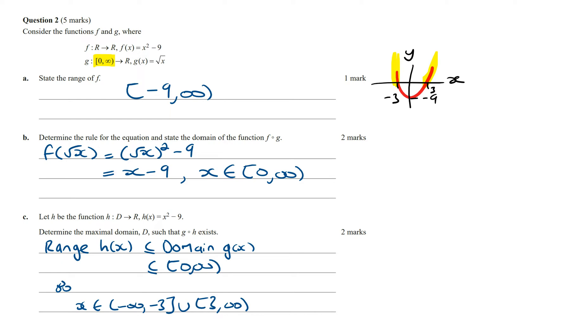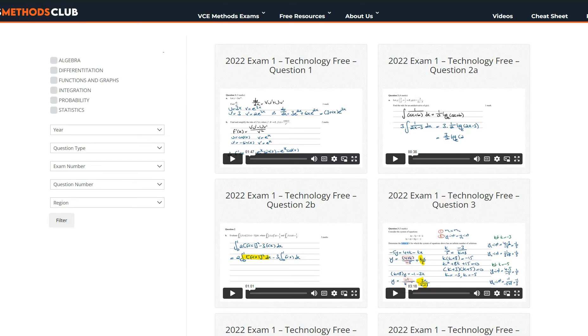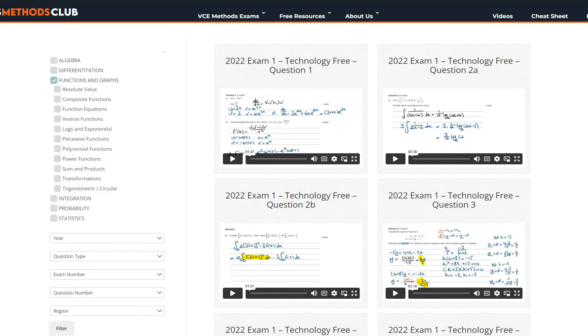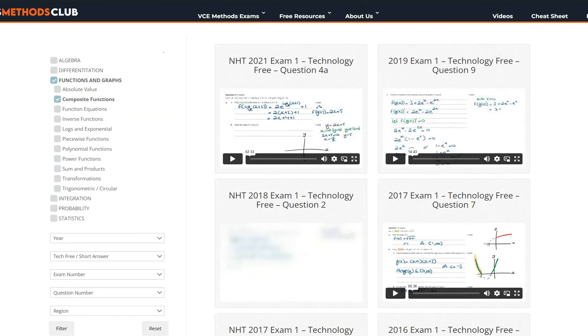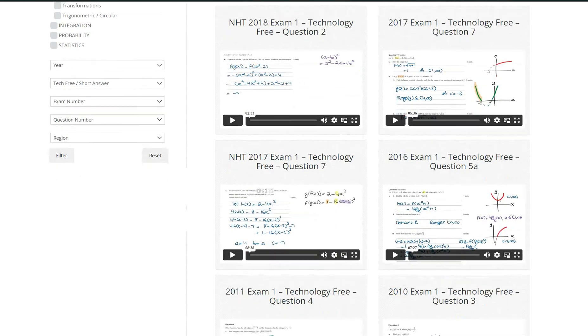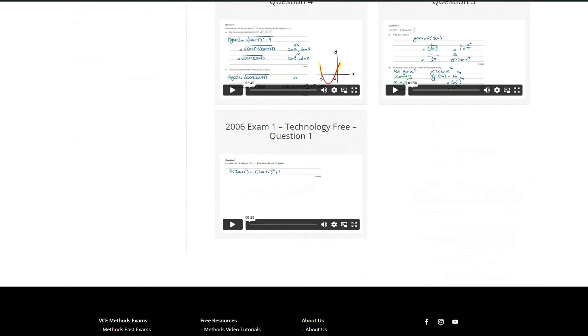And that's it for this question. Now if you guys want to practice or learn exam-style questions similar to this one, then log into the Maths Methods Club, where you can group past Maths Methods exam questions by topic. All you have to do is click on functions and graphs from the main topics and then select composite functions from the subtopics. Go to Question Type and select Tech Free and then click on Filter. This is then going to instantly group all the past Maths Methods exam questions related to composite functions in Exam 1.